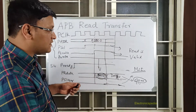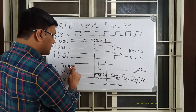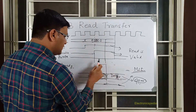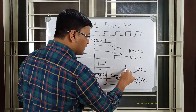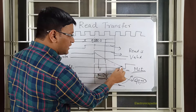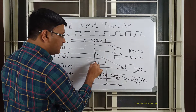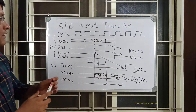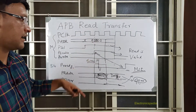If the slave is not ready and it chooses to de-assert PREADY - meaning PREADY is zero here and it comes high over here - then you can see there is a wait cycle. This is about the read transfer with wait cycles.